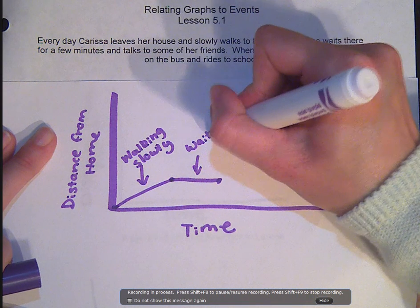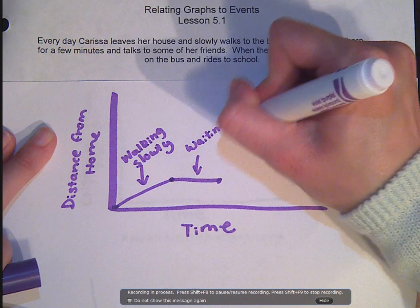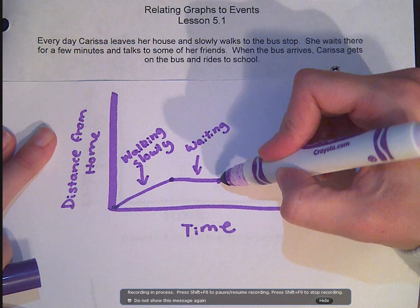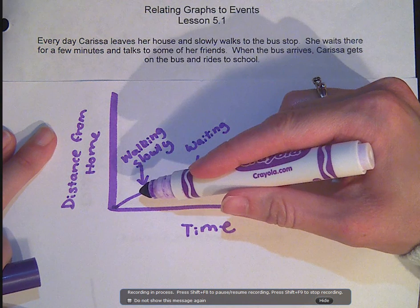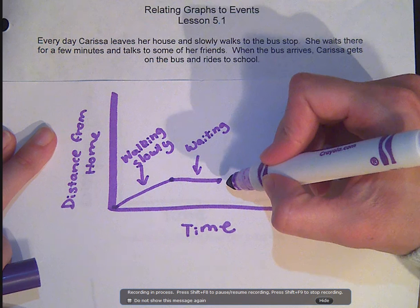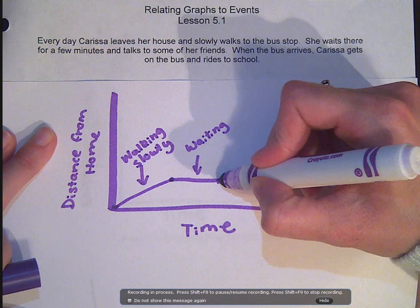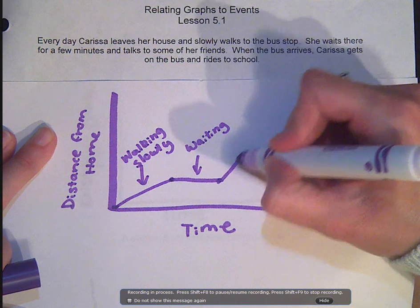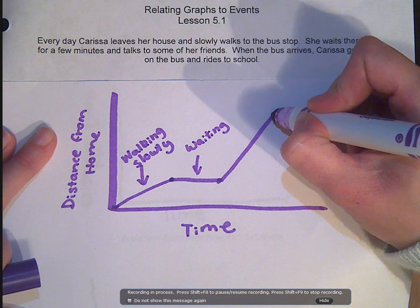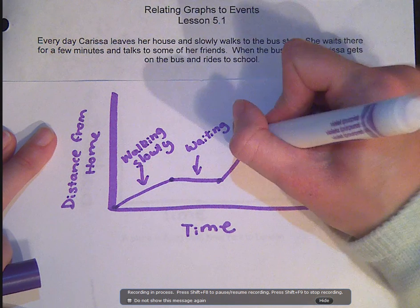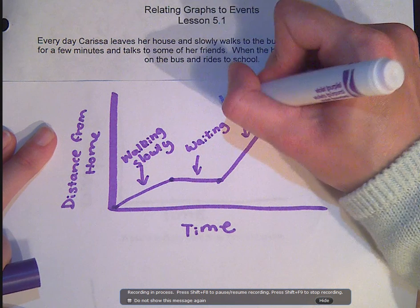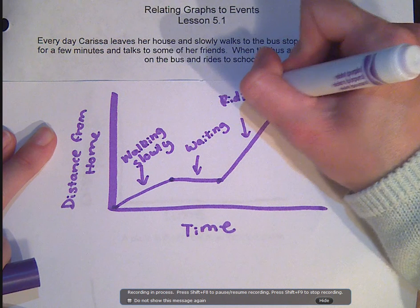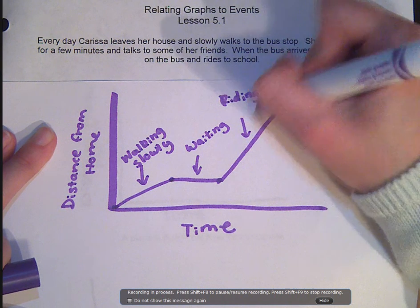The third part is her getting on the bus and going to school. The bus obviously goes a lot faster than her walking rate, so we should show that. Now we're going to have her getting on the bus — it goes a lot faster and her distance from home is increasing. This part is her riding the bus.